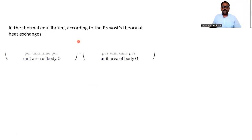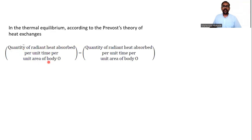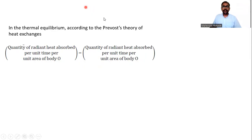By this principle, since temperature is constant, heat absorbed equals heat emitted. Writing this for body O: the quantity of radiant heat absorbed per unit time per unit area is equal to the quantity of radiant heat emitted per unit time per unit area by body O. Note: there is a printing mistake in the material — the second term should read 'emitted', not 'absorbed'.